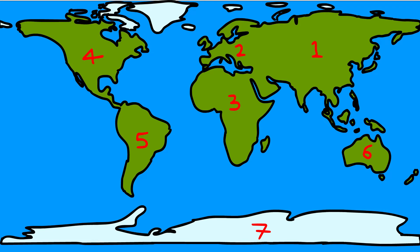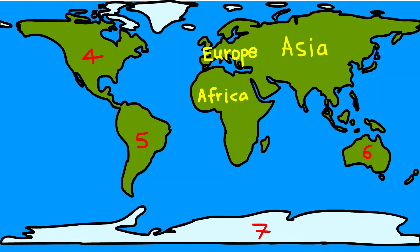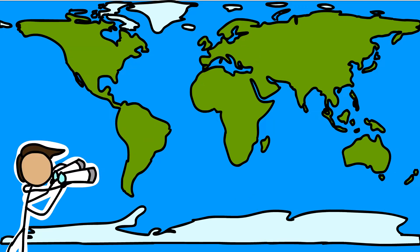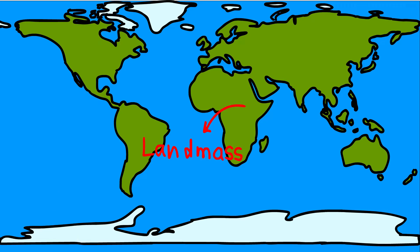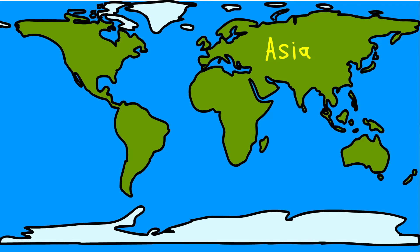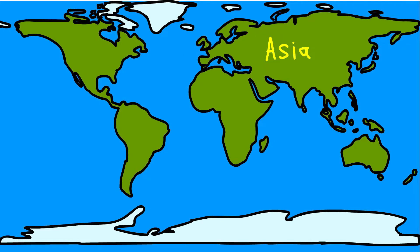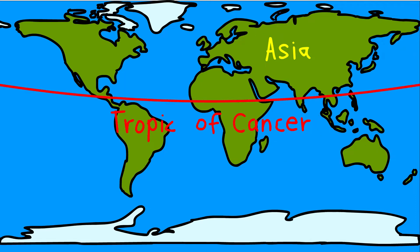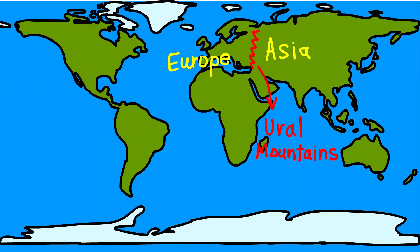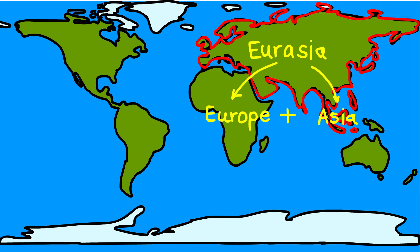Continents. There are seven major continents, separated by large water bodies. Asia is the largest continent. It covers about one-third of the total land area of the Earth. The continent lies in the eastern hemisphere. The Tropic of Cancer passes through this continent. Asia is separated from Europe by the Ural mountains on the west. The combined landmass of Europe and Asia is called Eurasia.